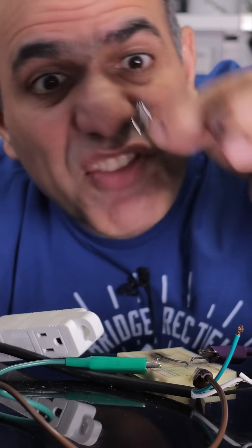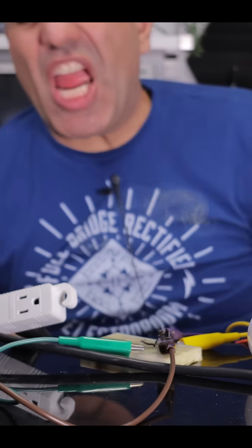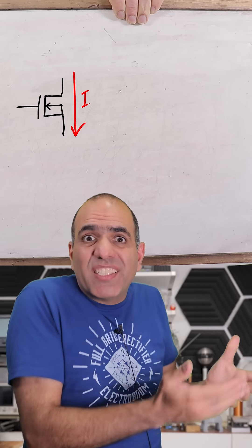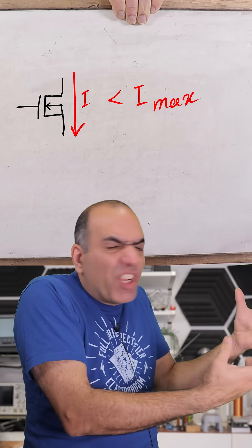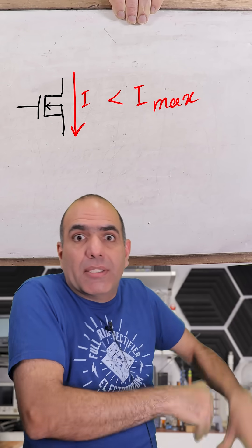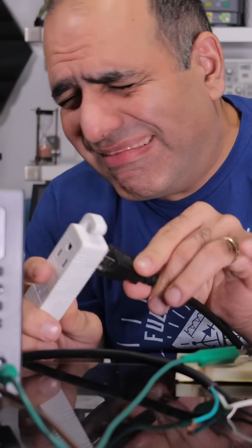Different MOSFETs have different voltage ratings, so we pick one that can do 500V and turn it on. A MOSFET also has a maximum current rating above which it overheats and burns. We are in good shape with a high-voltage, high-current transistor.